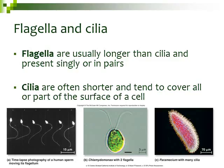Besides the cytoskeleton, eukaryotic cells can also have appendages: flagella, which are longer structures with usually only one or two per cell, and cilia, which are shorter hair-like structures that cover part or all of the cell surface. For example, a sperm cell has one flagellum that whips back and forth; a species of algae can have two flagella coming out the top to move through its environment; and a paramecium is covered with lots of cilia — those shorter hair-like structures.